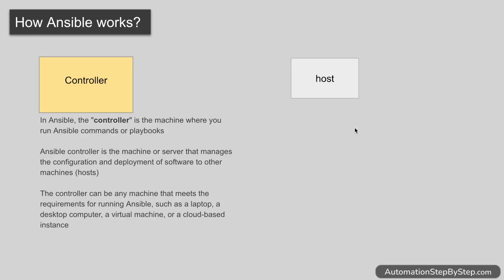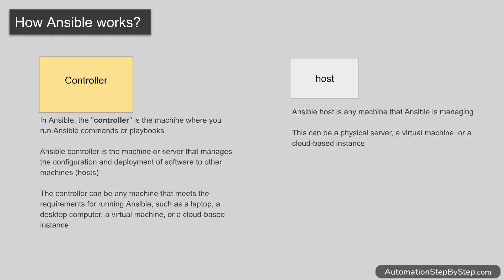The controller machine will manage the host servers and take care of doing updates, adding or removing software, and doing configurations on these host systems — all using Ansible files. The controller machine can be any machine: a physical system, a cloud machine, or a virtual machine. You will install Ansible on it and create files with information about the host systems and the instructions to run on them.